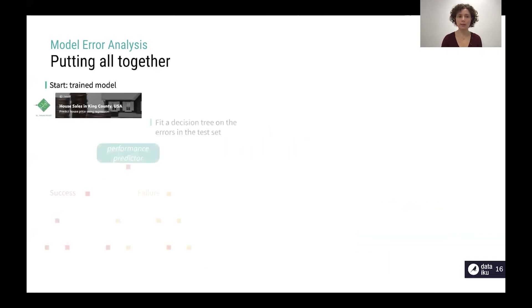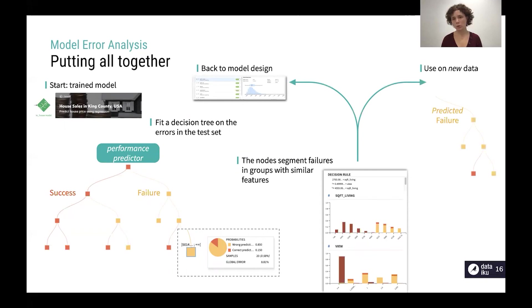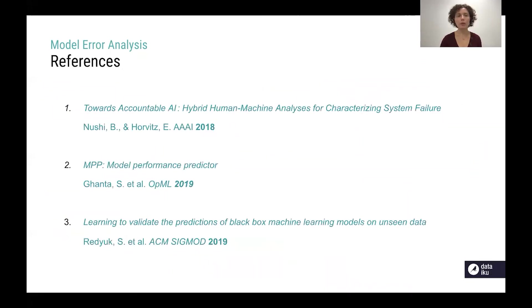So we have a trained model to start and we fit a decision tree on the errors in the test set to build our performance predictor. Then we can have a look at the failure nodes and we can have a look at the features that are more correlated with the error in those failure nodes. At this point we have two options: either we gather enough information to go back to model design or to improve our data collection process, or we can still use our model on new data to predict possible failure on some data and then we can select this data and send for instance for manual inspection instead.